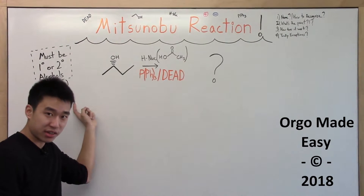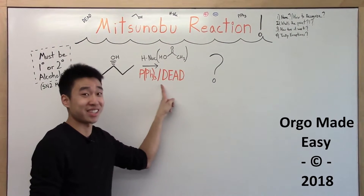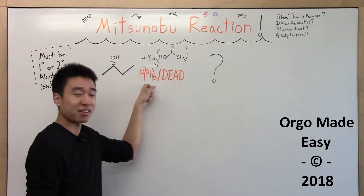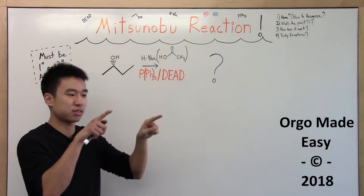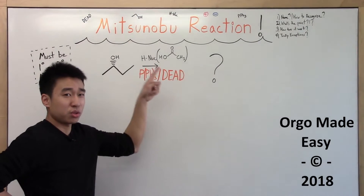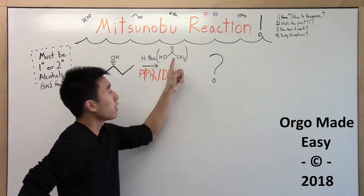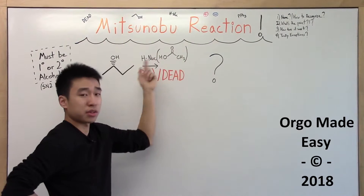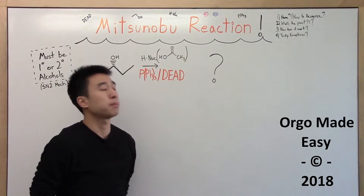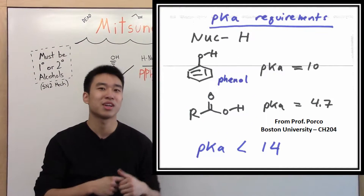Well, you're always going to have a primary or secondary alcohol. You're always going to see DEAD — this might be the only reaction in Orgo 2 that you see with the reagent DEAD in it. It scares students all the time, but it's not that bad. PPh3, tri-phenylphosphine — it's a phosphorus attached to three phenyl groups, so benzene rings. You can just leave it as PPh3. And you're always going to have an H-Nuc, a nucleophile with a hydrogen attached to it. From the problems I've seen, they've pretty much almost always been a carboxylic acid group as the nucleophile, and the carbon chain can vary. Let me know if you see another nucleophile your professor uses in the comments down below.